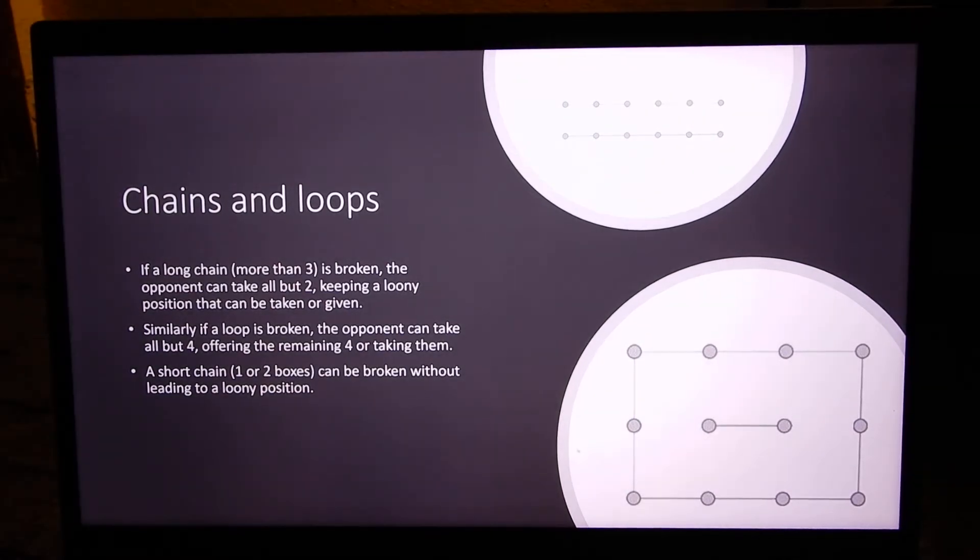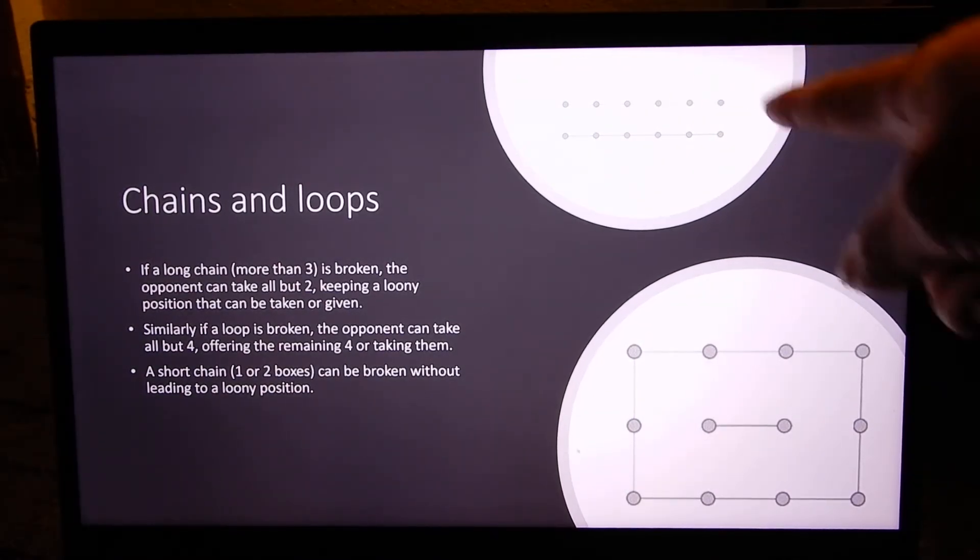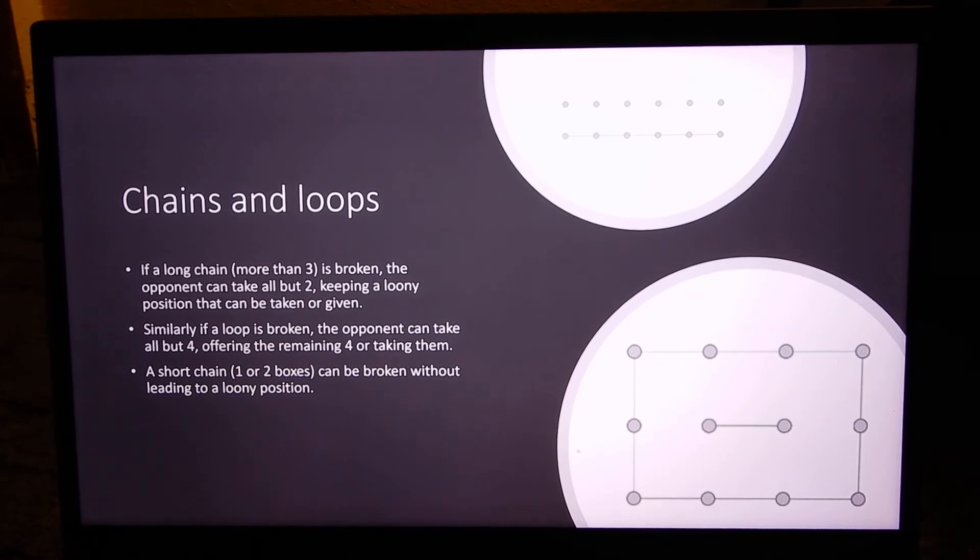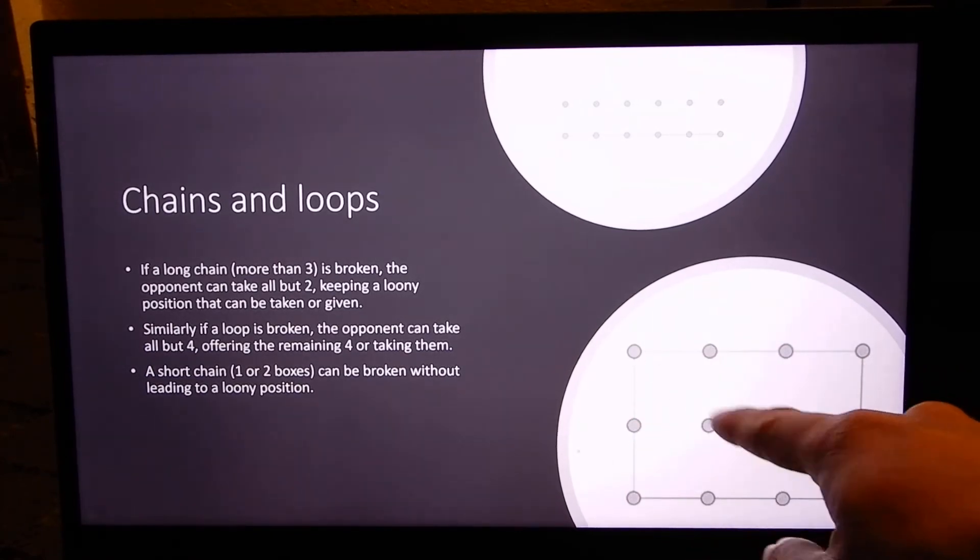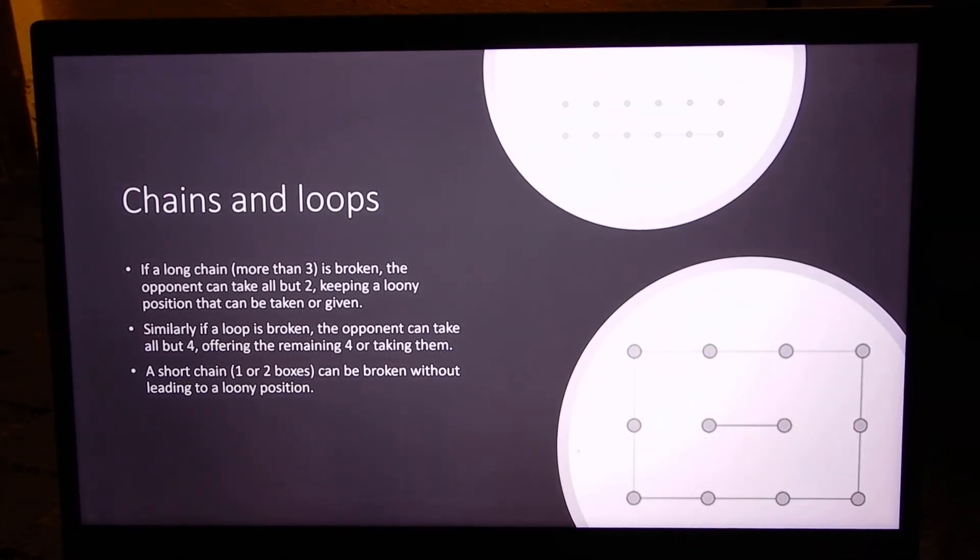Two special cases of loony positions are the chain and the loop. If you have a long chain of more than three or more boxes, you're always going to give a handout, and the opponent can take all but two or can take all. With a loop, if it's broken, the opponent can take all the boxes, or he can take all but two and leave you with four boxes and force you to play first in the remainder of the position.